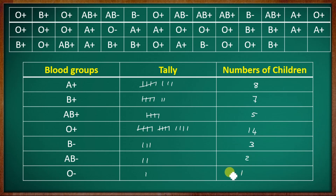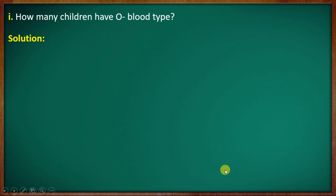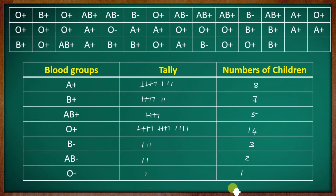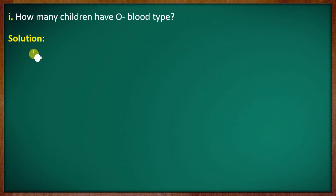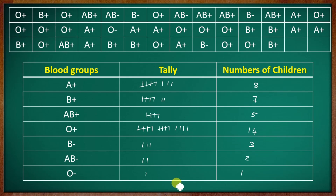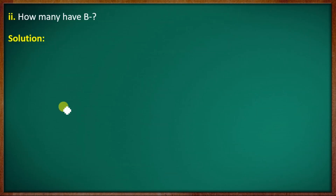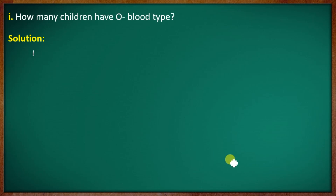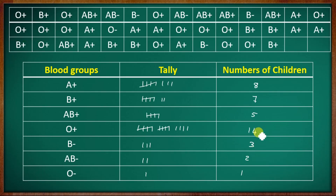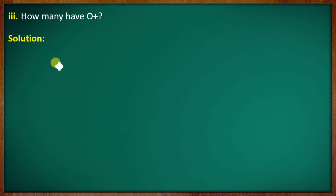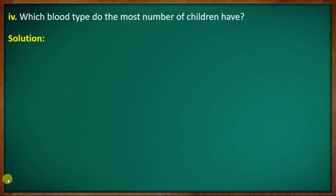Now the sub-questions. How many children have O negative? O negative is 1. How many have B negative? B negative is 3. How many have O positive? O positive is 14.